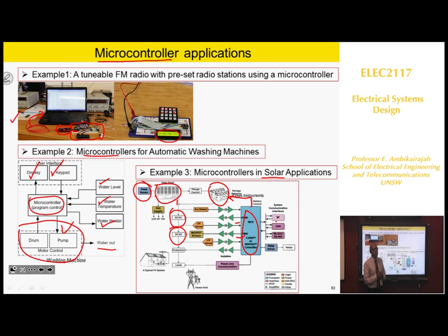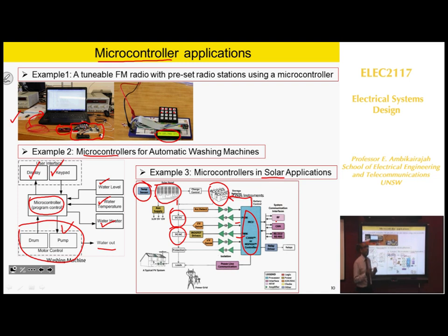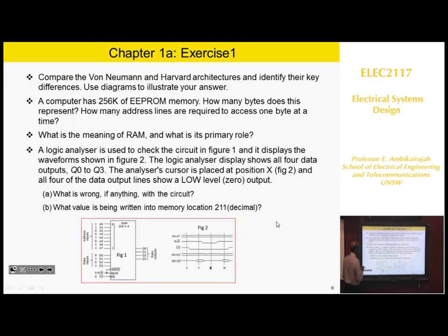A microcontroller has program memory, data memory, input/output, and a control unit — everything is in one chip. Earlier we learned about separate modules: memory outside, input/output outside. Now, a microcontroller consists of everything integrated into a single chip.